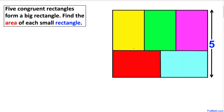Welcome to pre-math. In this video tutorial, we have five concurrent rectangles that form a big rectangle, as you can see in this figure. The width of this big rectangle is five units. Now we are going to find the area of each small rectangle, so let's go ahead and get started with the solution.